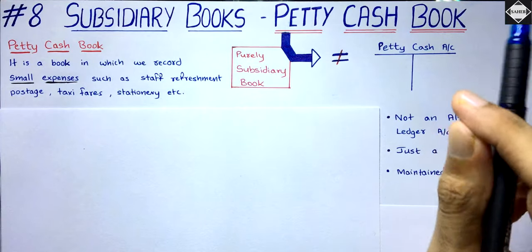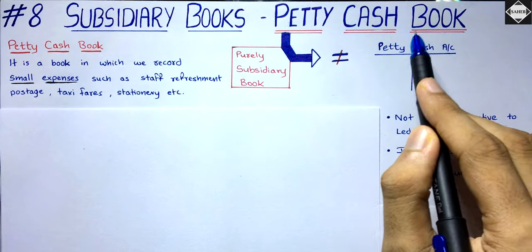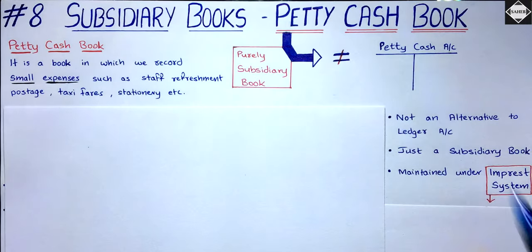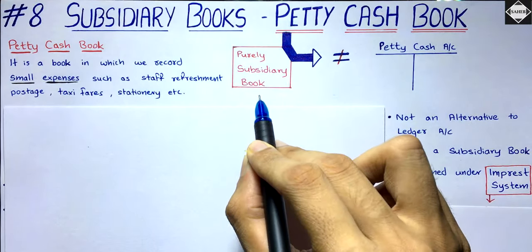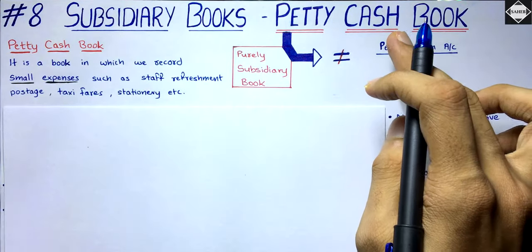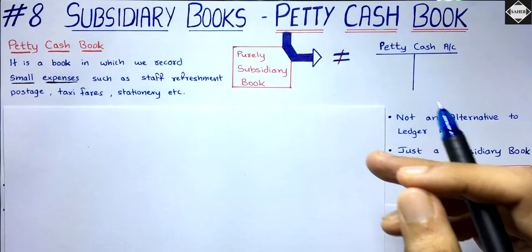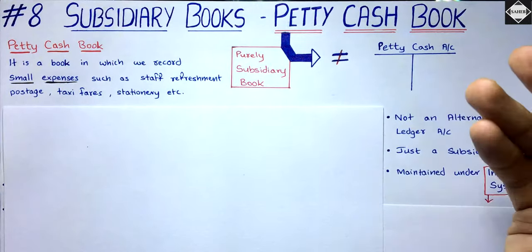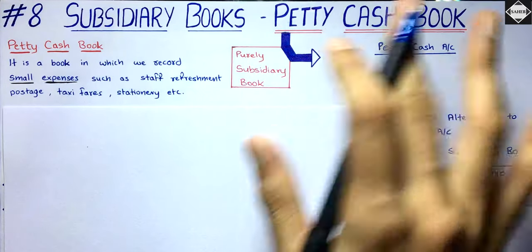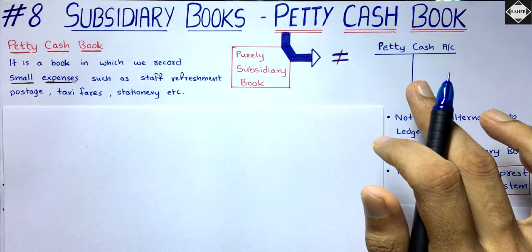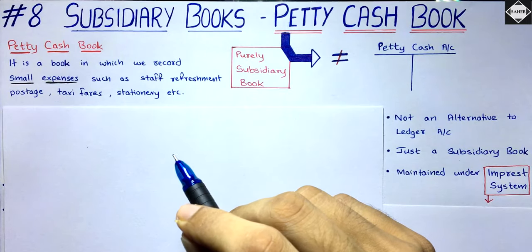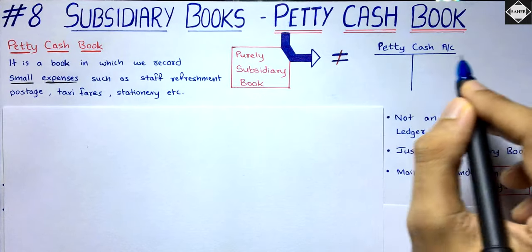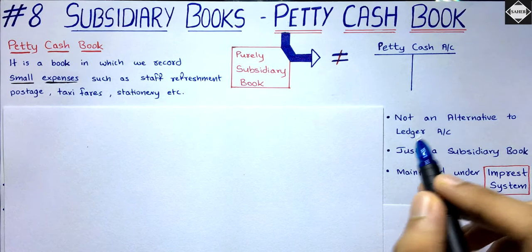One more important thing to understand regarding petty cash book: it is not like the other cash books. It is not like single column, double column, or triple column cash book. Here it's just a subsidiary book — purely subsidiary. In the other cash book videos I told you that a cash book is not just a subsidiary book but also the principal book. The cash column and bank column were equal to the ledger accounts. But here, petty cash book is not equal to the petty cash ledger account. If you are preparing a petty cash book, you still have to separately prepare the ledger account of petty cash.